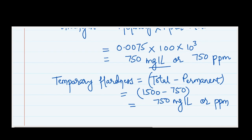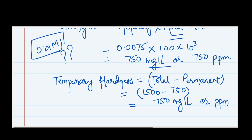So now you understand how these questions are solved when the EDTA molarity is not the default 0.01 molar but something else — you simply use M1V1 = M2V2 and multiply by the molar mass of calcium carbonate. If you liked the content, please hit like, subscribe for more videos, and mention in the comments how you liked it. Thank you so much.